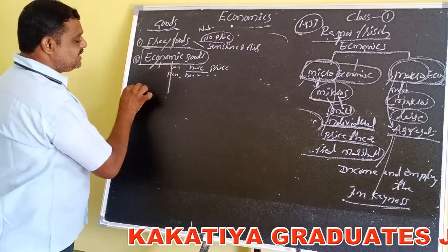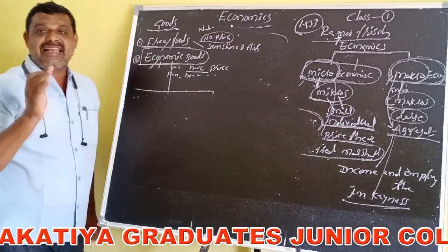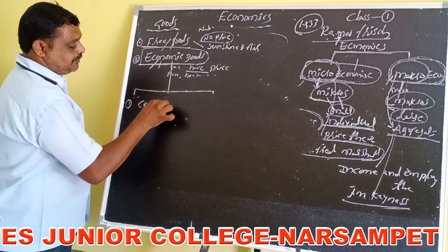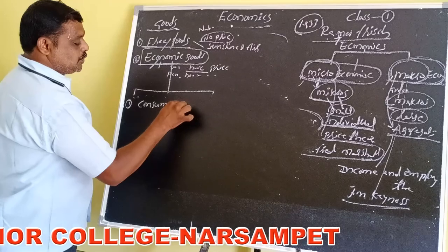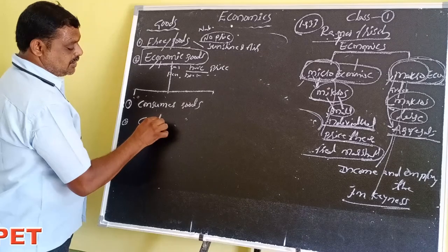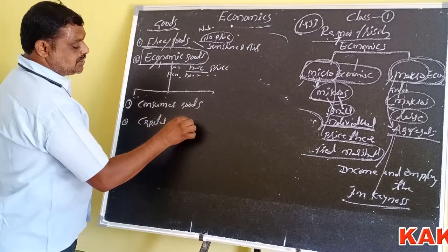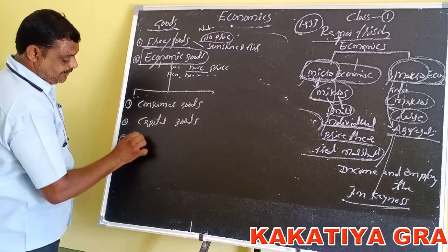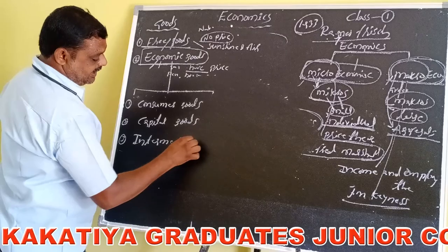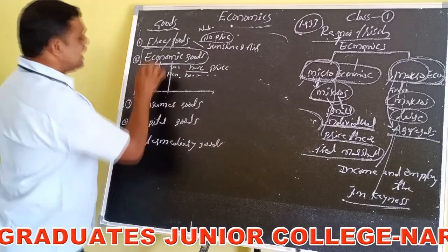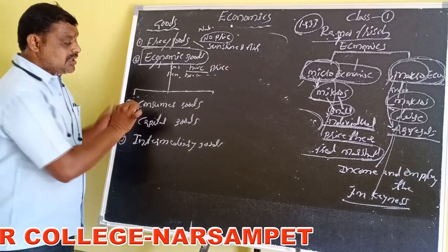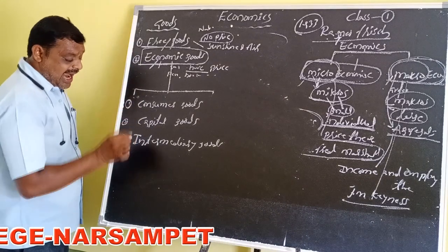Economic goods are of three types: number one, consumer goods; number two, capital goods; and number three, intermediary goods.